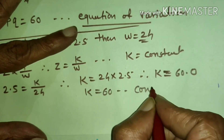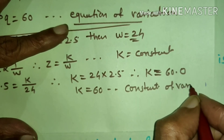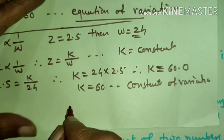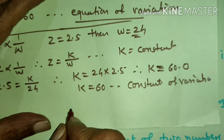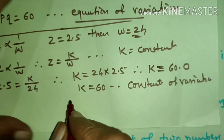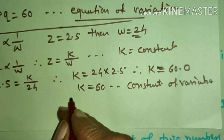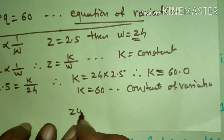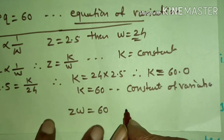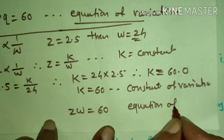And the equation of variation is Z into W is equal to 60. This is the equation of variation.